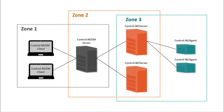SSL configuration in Control-M is divided into zones. Zone 1 is the configuration between Control-M clients and the Control-M web server. Zone 2 is the configuration between the Control-M EM server and Control-M server. And Zone 3 is the configuration between Control-M server and Control-M agents. In this video, we'll focus on Zone 2, the configuration between Control-M EM server and Control-M server, and Zone 3, the configuration between Control-M server and Control-M agents.